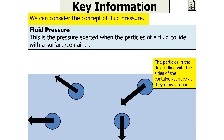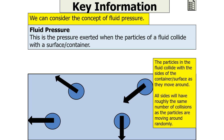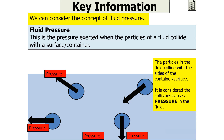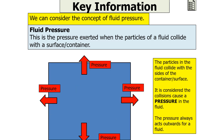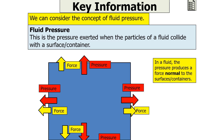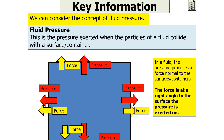The particles in the fluid will collide with the sides of the container or the surface as they move around. Because the motion is random, all sides will roughly have the same number of collisions as the particles are moving freely. These collisions cause a pressure in the fluid. Because of the direction of the collisions, the pressure will always act outwards on a fluid, producing a force normal to the surface or the container — that is, at a right angle to the surface the pressure is exerted on.